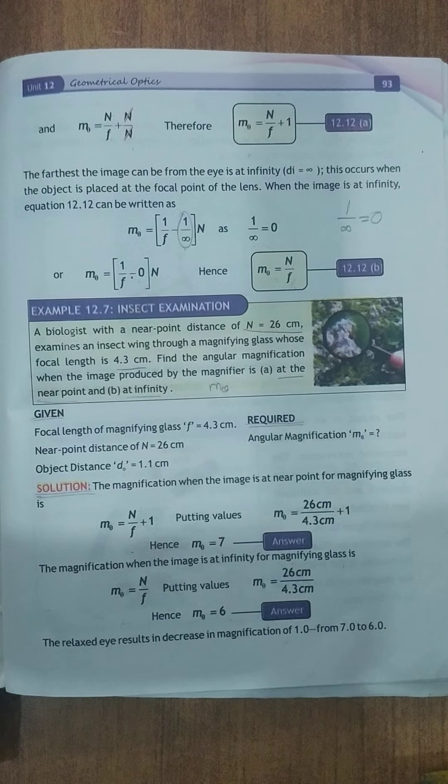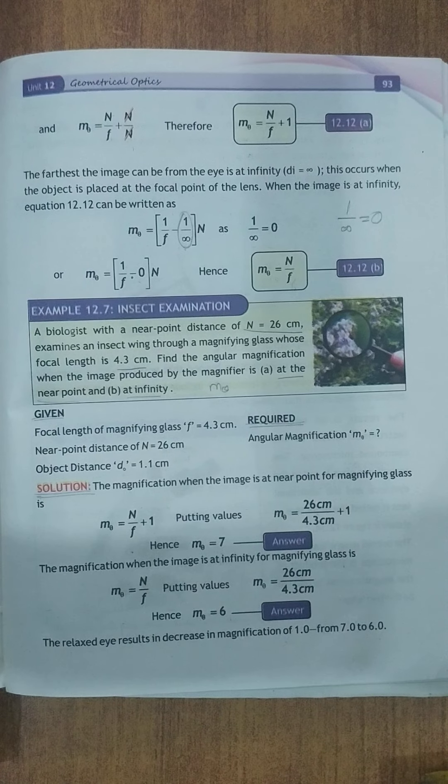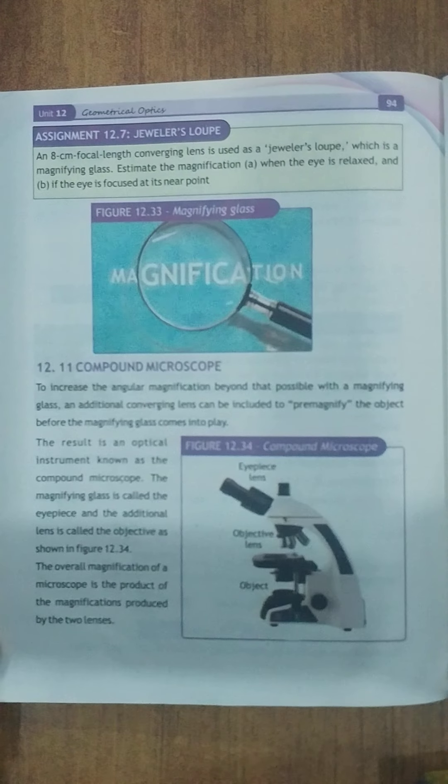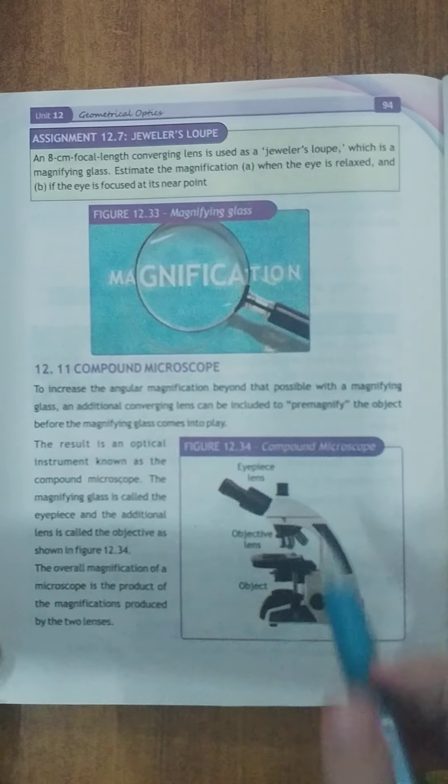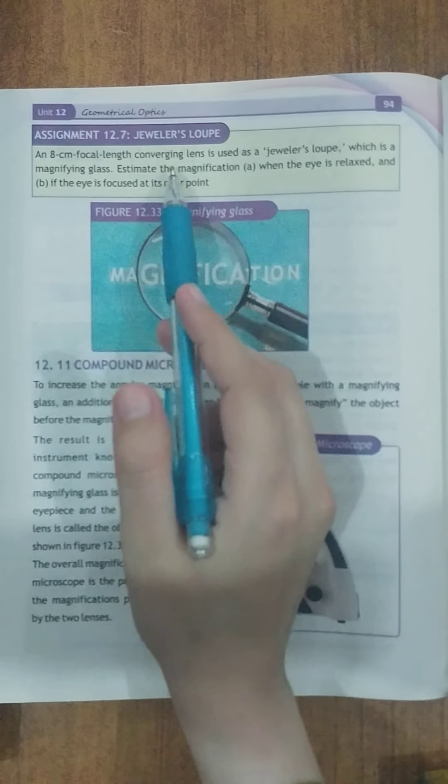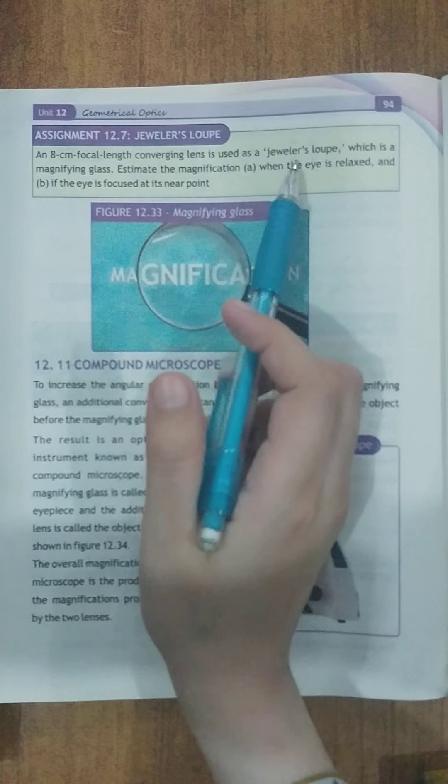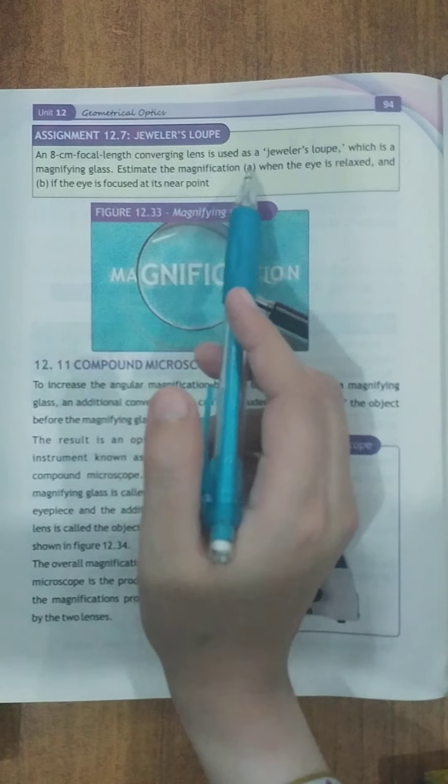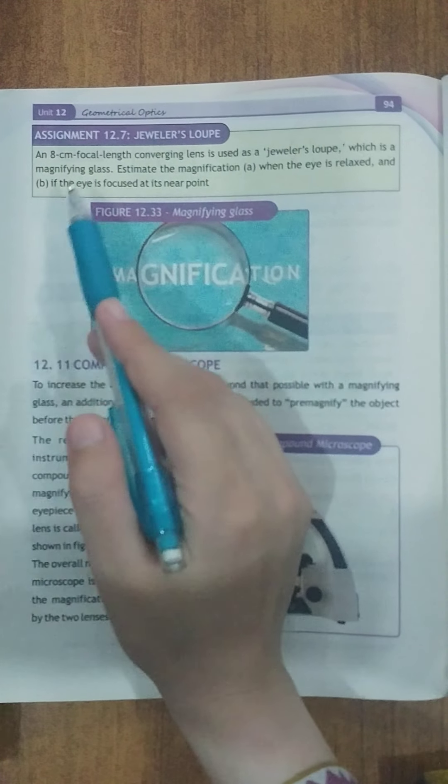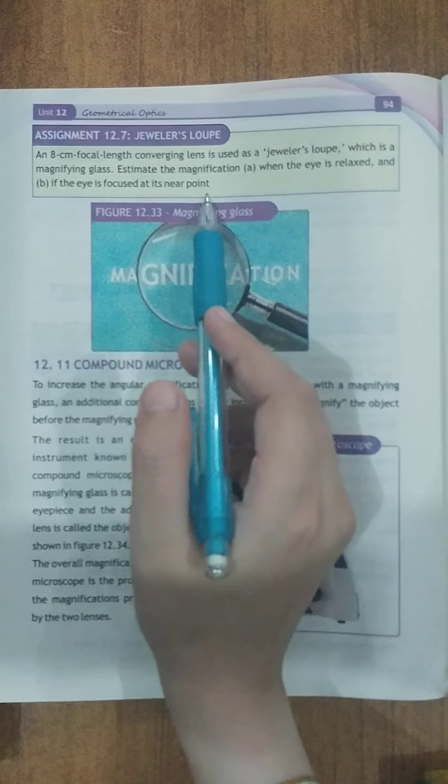Theek hai. Next page pe aap dekh sakte hain page number 94 pe aapke paas assignment 12.7 hai. 8 cm focal length converging lens is used as a jeweler's loop which is a magnifying glass estimate the magnification when the eye is relaxed and if the eye is focused at its nearest point.